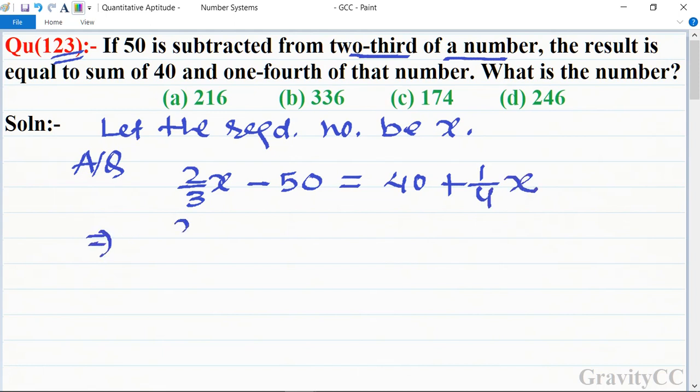So now 2 upon 3x minus 1 upon 4x is equal to 40 plus 50. So implies that